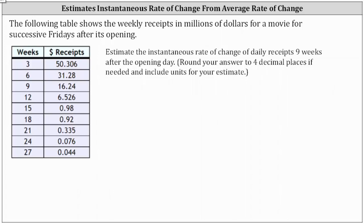The table shows the weekly receipts in millions of dollars for a movie for successive Fridays after its opening. We're asked to estimate the instantaneous rate of change of daily receipts nine weeks after the opening — that is, how fast the revenue is changing at exactly nine weeks.